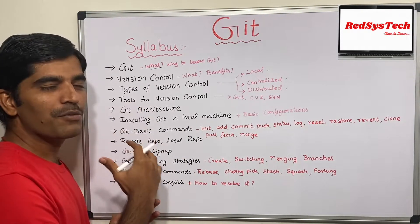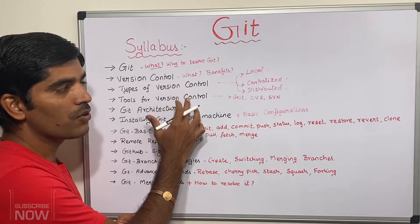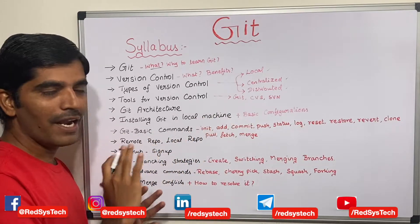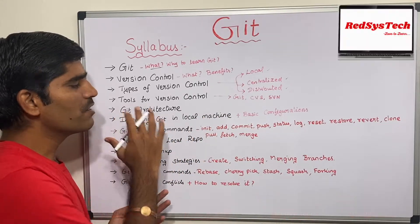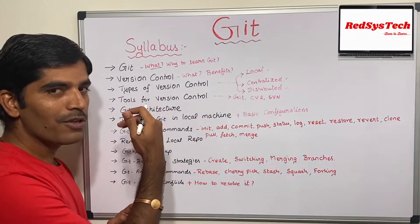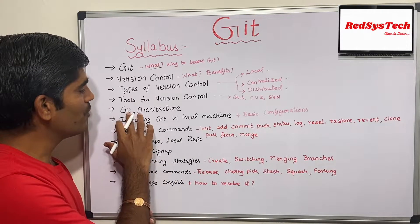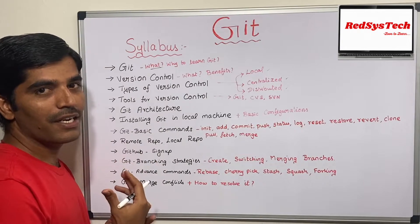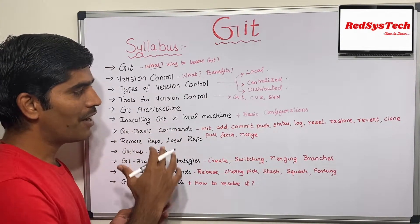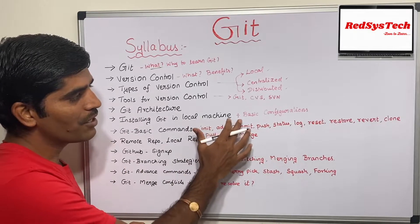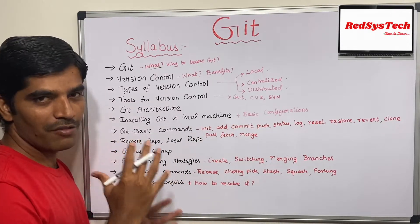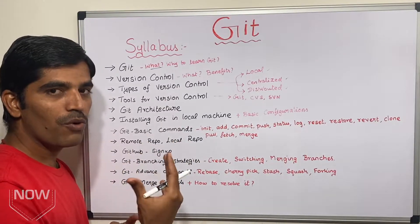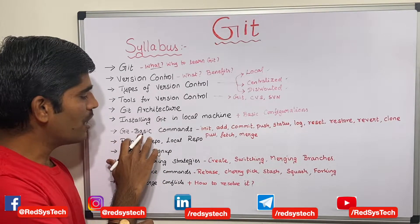We are going to learn about the different types of tools available for achieving version control in your project — Git, CVS, SVN — but this course will focus only on Git. From there we will slowly get into Git architecture, learning how Git is architected and how it works internally in the background. Then we will get our hands dirty by installing Git on your local machine and starting with some basic configurations so you can start pushing and pulling code.